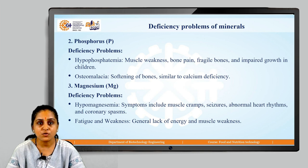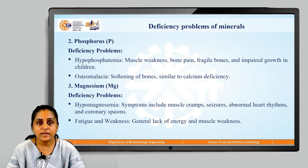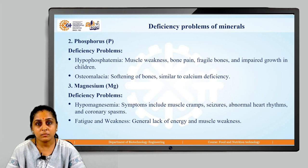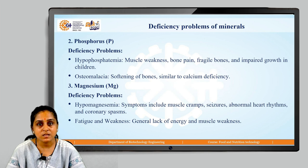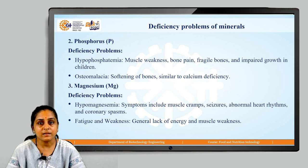Next, let us look at the deficiency problems with respect to magnesium. It involves hypomagnesemia, whose symptoms include muscle cramps, seizures, abnormal heart rhythms and coronary spasms. Fatigue and weakness is another deficiency problem, leading to general lack of energy and muscle weakness in our body.